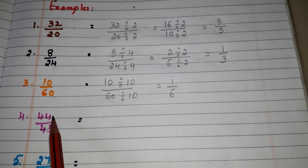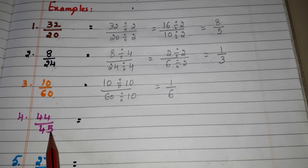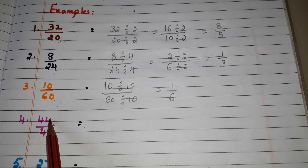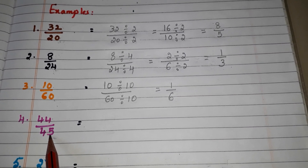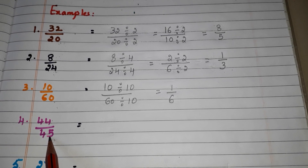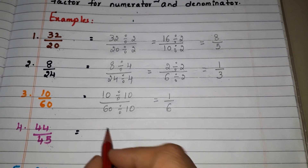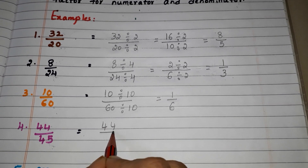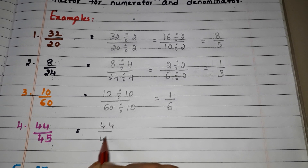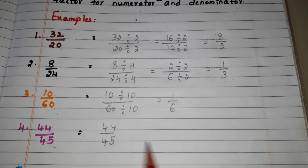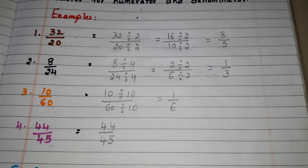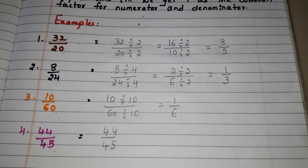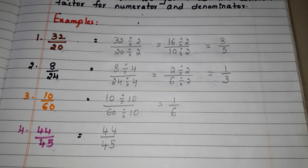Let us go to another example: 44 by 45. You observe that here 1 is the only factor which is common for 44 and 45. So the answer remains 44 by 45, because there is no other common factor for 44 and 45.